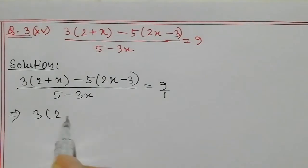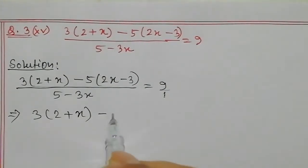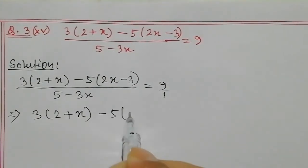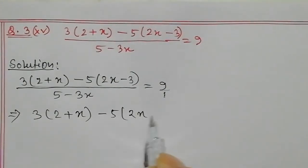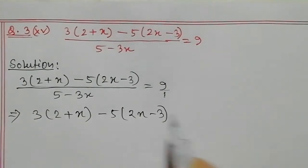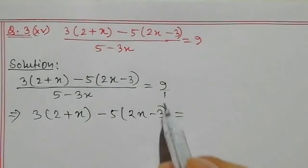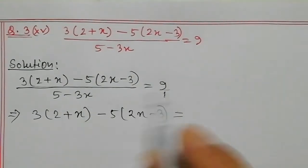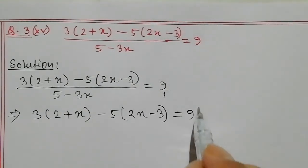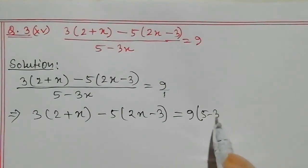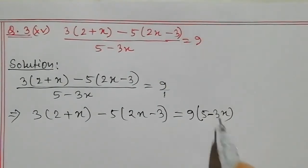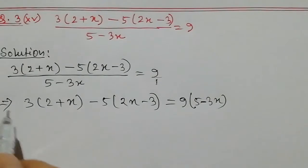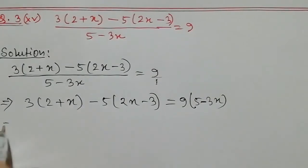This is the question: minus 5, bracket, 2x minus 3. And I have to add 1, and I have to add 9. So, 9 bracket 5 minus 3x. So I have to add 5 minus 3x. So I have to add 3.